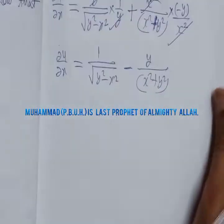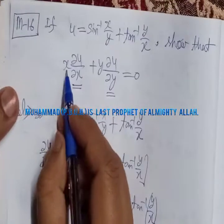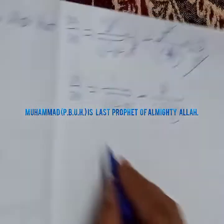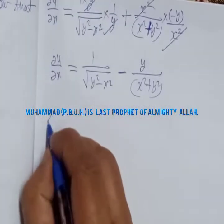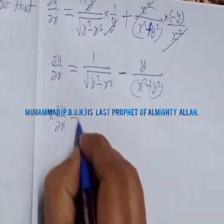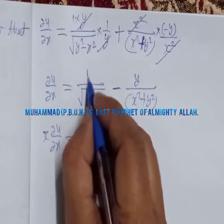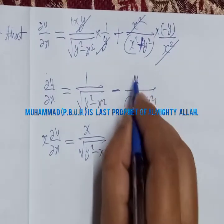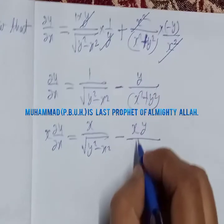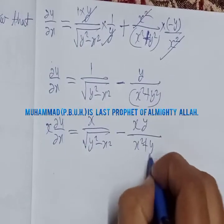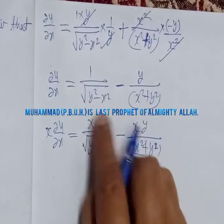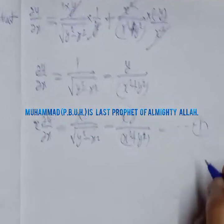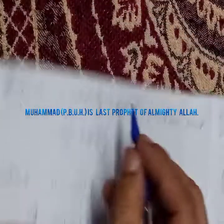Now multiplying through by x, we get x·∂u/∂x = x/√(y² - x²) - xy/(x² + y²). We write this as Equation 1.